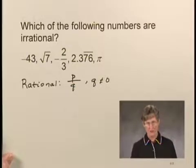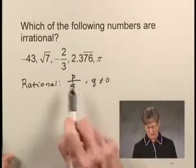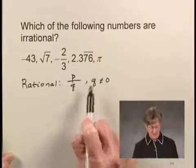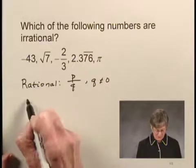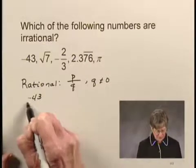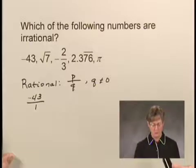Now we want to find the irrational numbers, so we'll just look through here and determine which of these are rational, and the others will be irrational. Negative 43 is a rational number because I can write it as a quotient of integers. One way I can write it is negative 43 over 1.